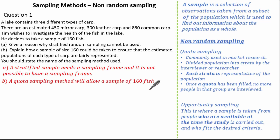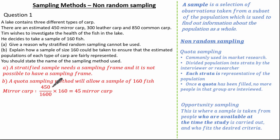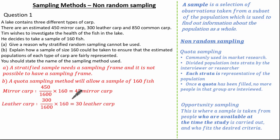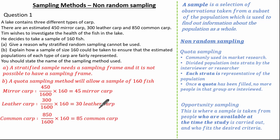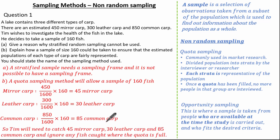For mirror carp: 450 out of 1600 multiplied by 160 gives a sample of 45 mirror carp. For leather carp: 300 out of 1600 multiplied by 160 gives a sample of 30 leather carp. For common carp: 850 out of 1600 multiplied by 160 gives a sample of 85 common carp. So Tim will need to catch 45 mirror carp, 30 leather carp, and 85 common carp, and ignore any fish caught where the quota is full.